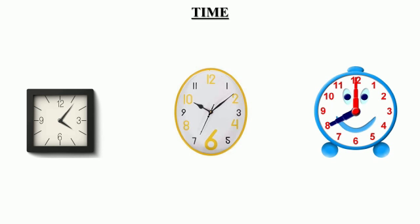How many numbers are there on the face of the clock? Let's count. One, two, three, four, five, six, seven, eight, nine, ten, eleven, twelve. There are twelve numbers on the face of the clock.